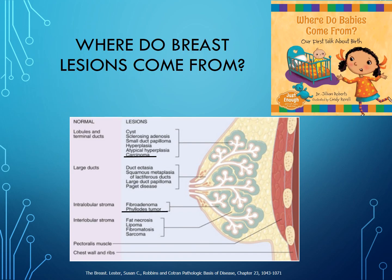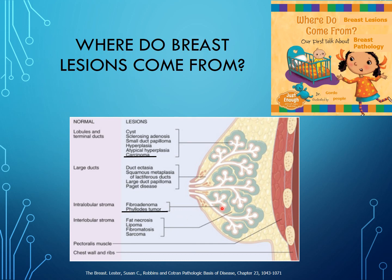Where do breast lesions come from? Carcinoma actually comes from the luminal cells lining the acini. Things like squamous metaplasia, lactiferous ducts, and large duct papillomas come from the duct system. Fibroepithelial lesions such as fibroadenoma and phyllodes tumor come from the intralobular stroma — the stroma just around the terminal ductal lobular unit.